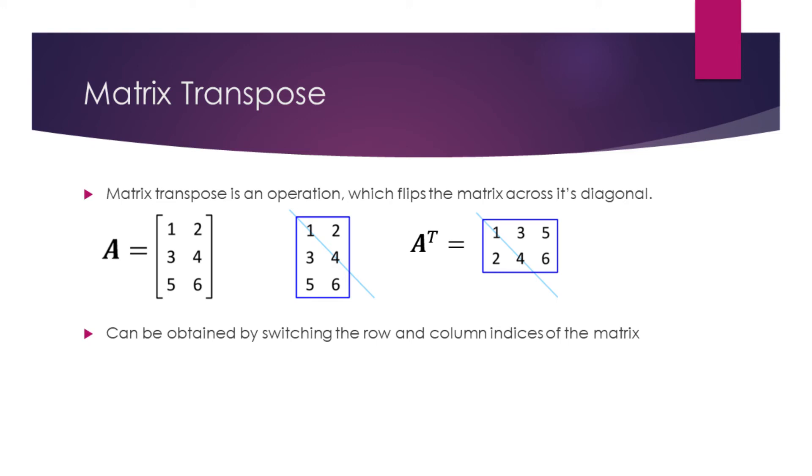As we can see, the transpose of a matrix is denoted by adding a superscript capital T. We can also obtain the transpose by switching the row and column indices of the matrix. For example, in the matrix A, the number 3 is in the second row of the first column. After transpose, it ends up in the first row of the second column. So the element has switched its row and column. The same is true for every other element of this matrix.